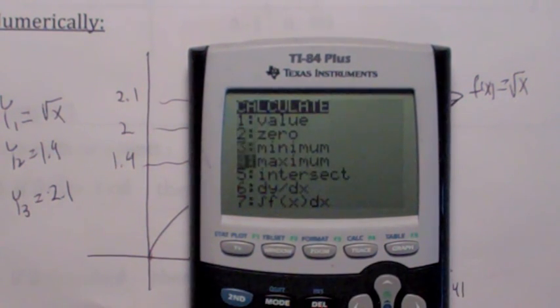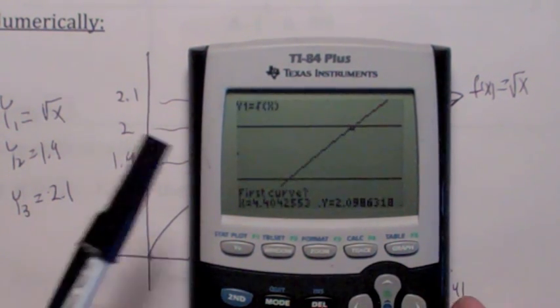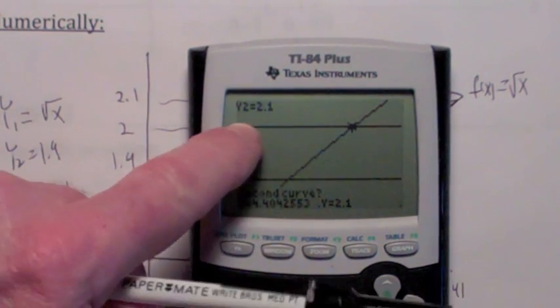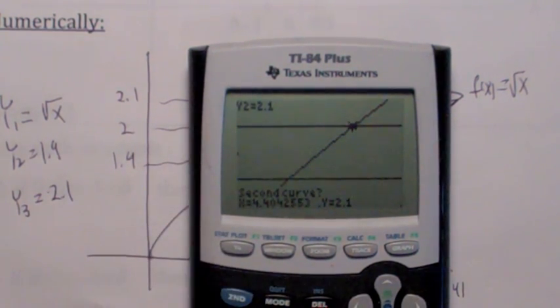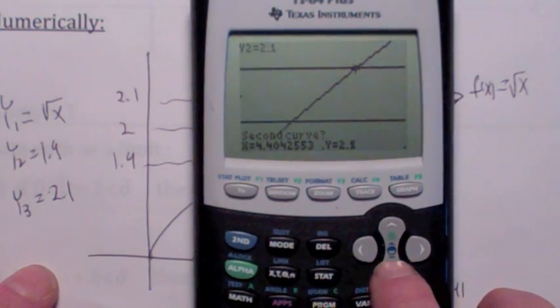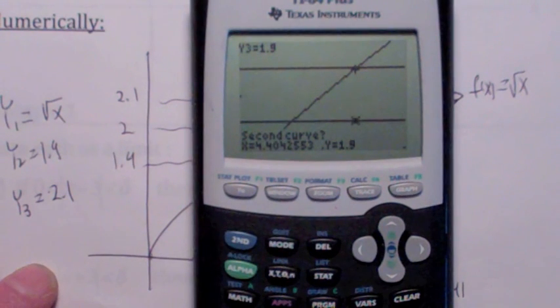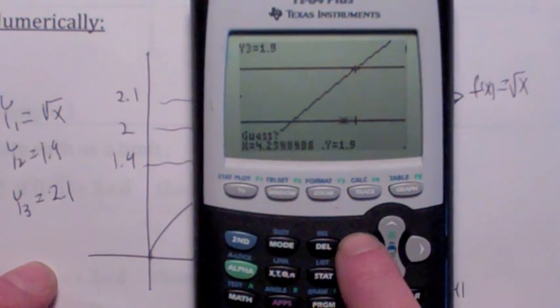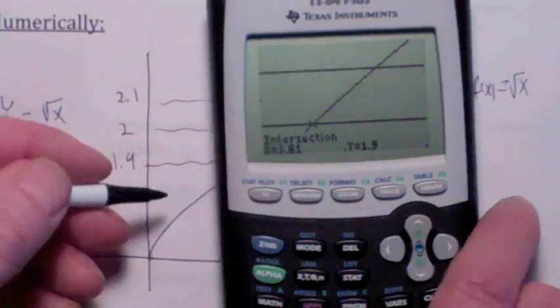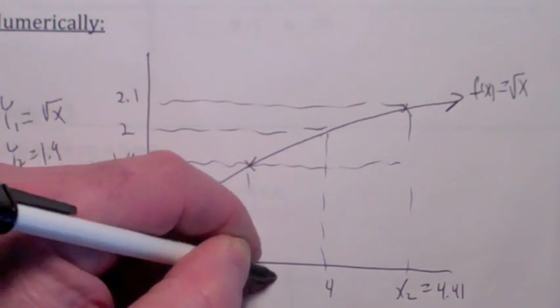Now, to find the other point of intersection, you go second calc intersect. My first curve is the square root function. Now, for the second, hit enter once. For the second curve, I don't want 2.1. I want 1.9. So, if you go down arrow on your cursor thing, it moves you down to this other graph. This is what I want is y2. Hit enter again. And then guess. Enter, get close to that point, enter a third time, and you get 3.61.